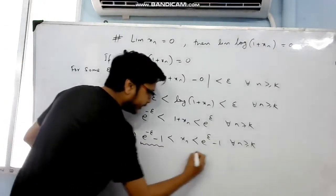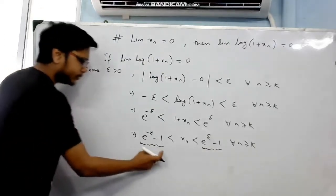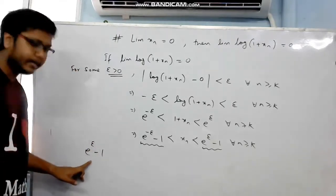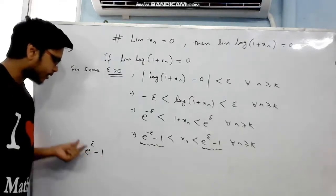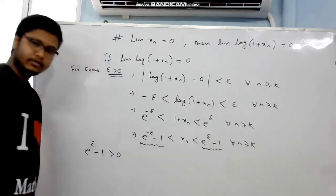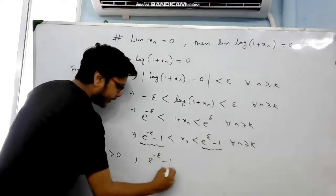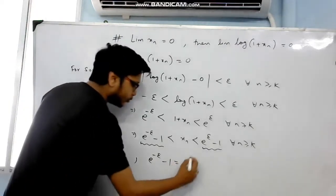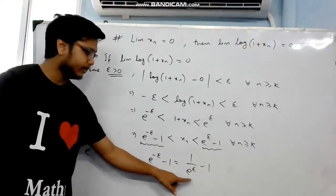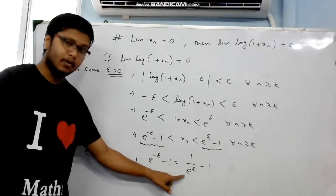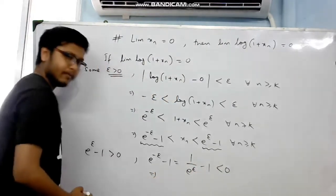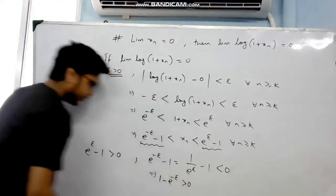Subtracting 1 throughout gives e^(−ε) − 1 < xn < e^ε − 1 for all n ≥ k. If we can establish this line, we can work backwards to prove the theorem. Now, since ε > 0, e^ε − 1 is positive (e^ε > 1, so e^ε − 1 > 0). Similarly, e^(−ε) − 1 is negative, meaning 1 − e^(−ε) > 0. So both quantities are positive.